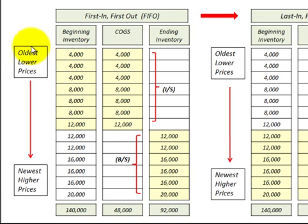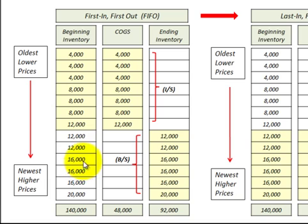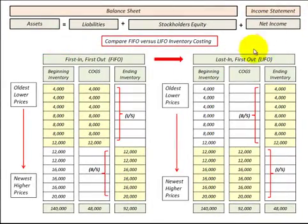The tables are laid out with our oldest inventory with the lower costs listed on the top. As we proceed down the table, we get to our newest inventory with higher prices. So our examples will be based on rising prices or rising costs. After going through the examples for FIFO and LIFO, I'll show a simple balance sheet and income statement so we can make a comparison between the two inventory costing methods.